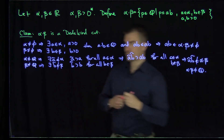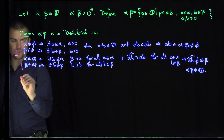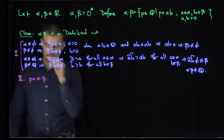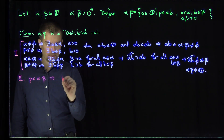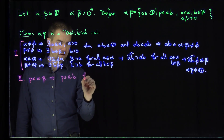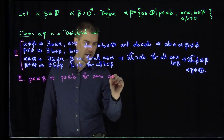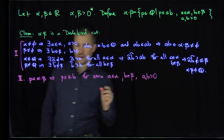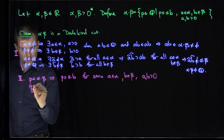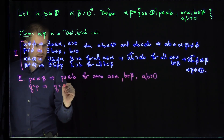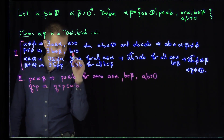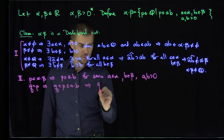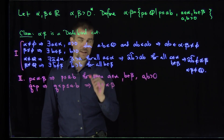Now let's do property two of Dedekind cuts. Suppose that P is in alpha dot beta. This implies that P is less than or equal to A dot B for some A in alpha, B in beta, with A and B greater than zero. If Q is less than P, then Q is less than or equal to A times B as well. That's the same condition, so this implies automatically that Q must be in the cut — Q is therefore in the alpha beta set.